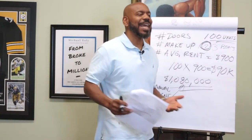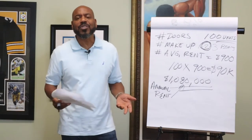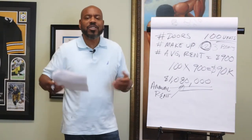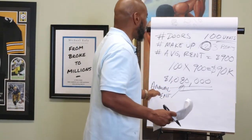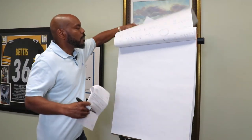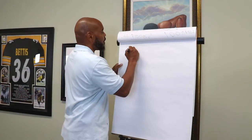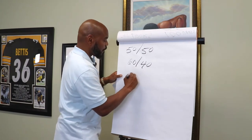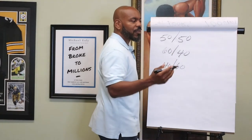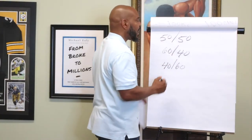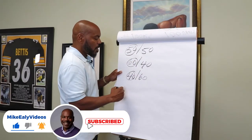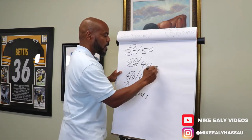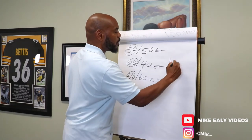Some people say they need all the expenses — they need the trailing 12. No, you don't. You do need it to get a serious number, but just to get an idea of where you're at, you simply use an expense ratio. So most of the time when you use an expense ratio there's the 50/50, the 60/40, and the 40/60. What we're saying is the first section — all of that goes to expenses — and then this portion should be your NOI.